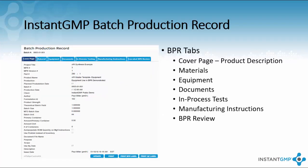This is the batch production record screen. If you remember the layout of the NPR screen, you will notice they are identical except for the final tab. Everything will look the same as the NPR the BPR was created from. The final tab in the NPR was the approved tab, whereas in the BPR it is the BPR reviewer tab.